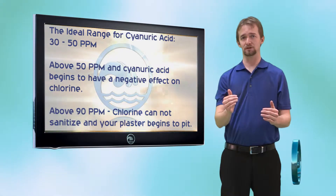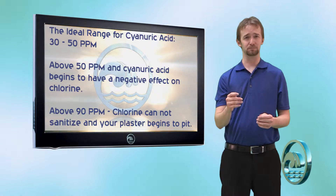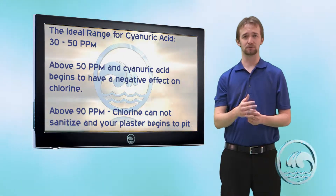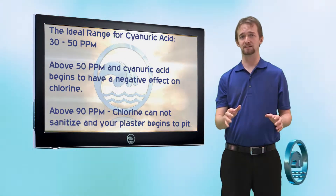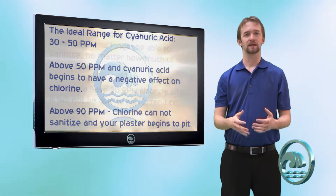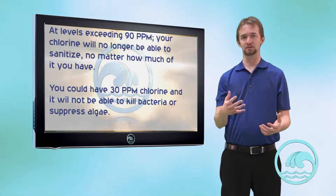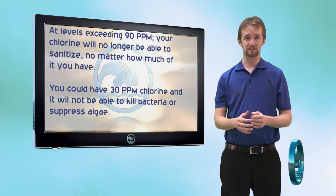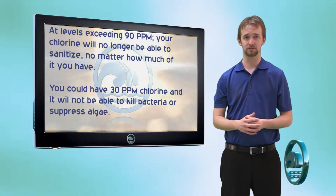Cyanuric acid, when it goes above 50, starts to have a detrimental effect on chlorine's ability to sanitize. And when cyanuric acid goes above 90 parts per million, chlorine is typically considered ineffective at sanitizing your water — meaning your chlorine will no longer be able to kill microorganisms or suppress algae. In fact, in some states, it is illegal to have your cyanuric acid go above 100 parts per million.